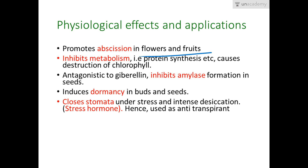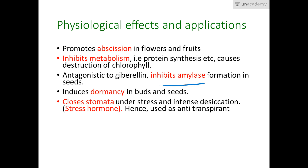The physiological effects and applications of abscisic acid: it promotes abscission in flowering plants. It inhibits metabolism, that is, protein synthesis, and causes the destruction of chlorophyll. It is antagonistic to gibberellin — whereas gibberellin promotes protein synthesis and amylase synthesis, abscisic acid inhibits these processes.